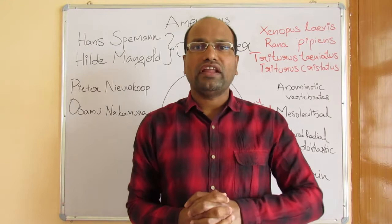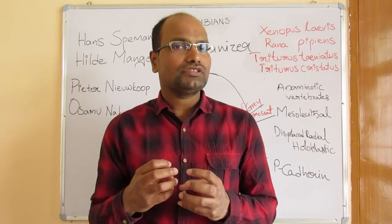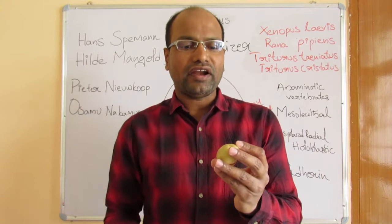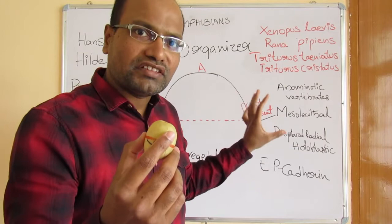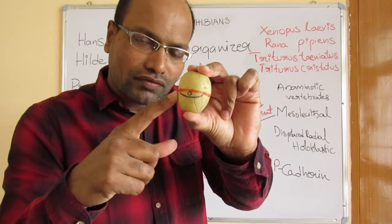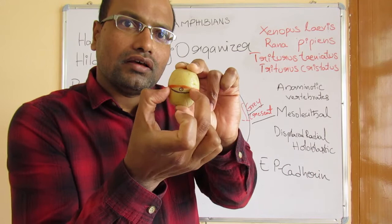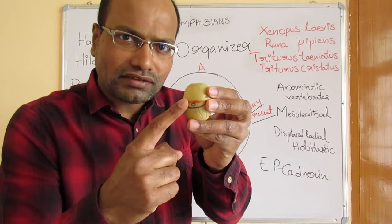Hans Spemann and Mangold were known for their classical studies and proposal of the concept of organizers. According to them, there are parts of the developing embryo critical in deciding the growth of the organism. They identified that these parts are present in the gray crescent area, which acts as an important organizer deciding the fate of the organism.